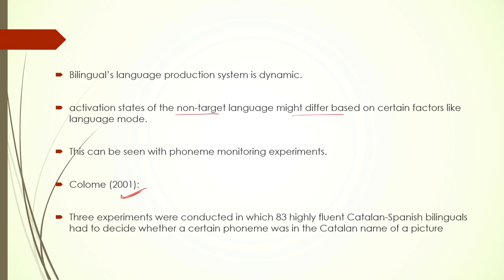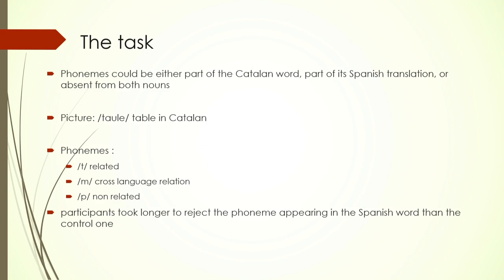Colome carried out a set of experiments with 83 high-proficient Catalan-Spanish bilinguals who had to decide whether a certain phoneme was in the Catalan name of a picture or not — a simple task of identifying a phoneme. They were shown a picture, and the task was: given a picture of a table, the word 'table' is not present in the picture. Only the picture of a table is shown, and then they are shown a phoneme — a letter which has a corresponding phoneme — and they had to decide if that phoneme was part of the Catalan name of the picture.